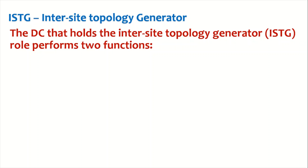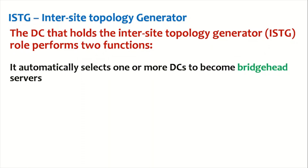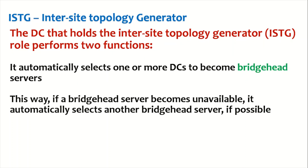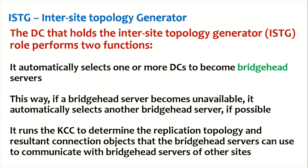The domain controller holding the ISTG role performs two main functions. First, it automatically selects one or more domain controllers to become bridgehead servers — there is no manual intervention — and if a bridgehead server becomes unavailable, it automatically selects another. Second, it runs the knowledge consistency checker to determine the replication topology and the connection objects that bridgehead servers use to communicate with other bridgehead servers. The whole purpose of the ISTG is to designate bridgehead servers and define the inter-site replication topology.